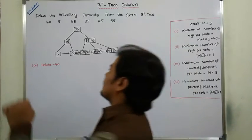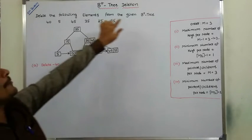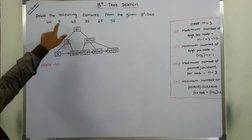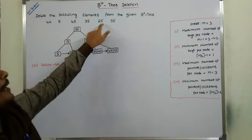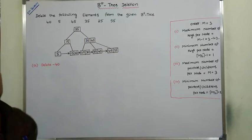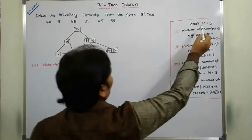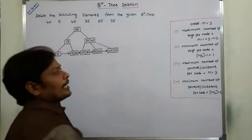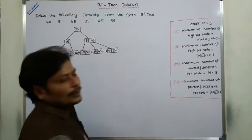This is the given problem: delete the following elements from the given B+ tree — 45, 30, 25, and 55. The order of the B+ tree is denoted by m, and m is equal to 3.